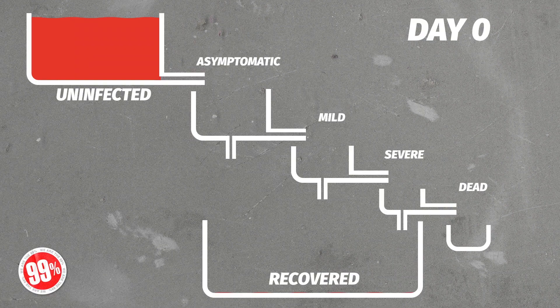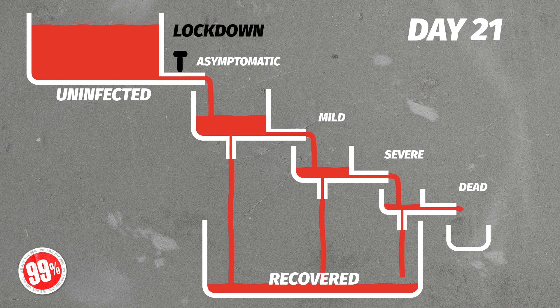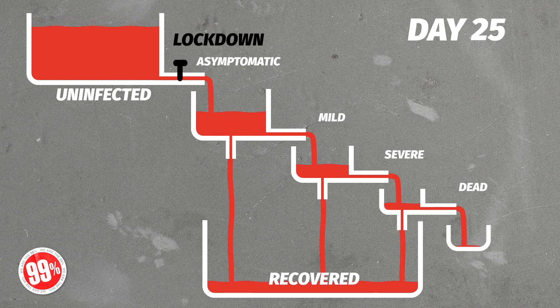Now what happens if we do the same thing but we use that tap deliberately by introducing a lockdown? We start as before, and you can see now on day 25 the lockdown happens — and let's assume it's a perfect lockdown.